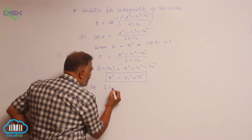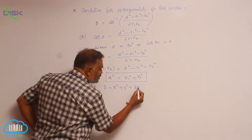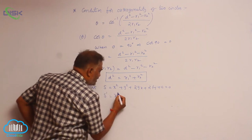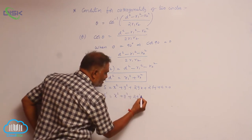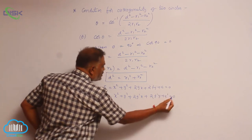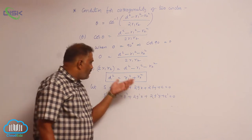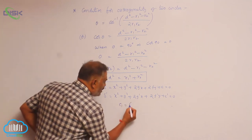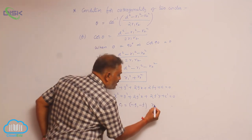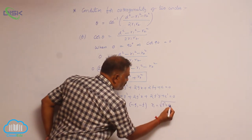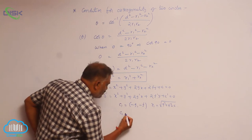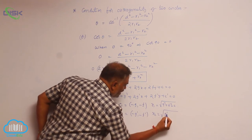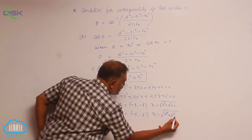Suppose you are given two circles: x squared plus y squared plus 2gx plus 2fy plus c equals 0, and a second circle x squared plus y squared plus 2g'x plus 2f'y plus c' equals 0. Apply the same formula. First, calculate both centers and both radii. So c1 equals (−g, −f), r1 equals root of (g squared plus f squared minus c). Then c2 equals (−g', −f'), r2 equals root of (g' squared plus f' squared minus c').